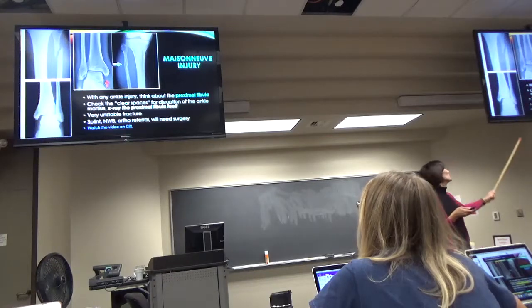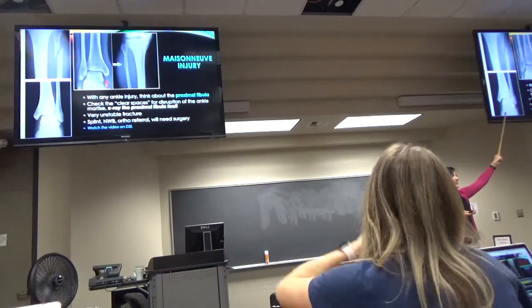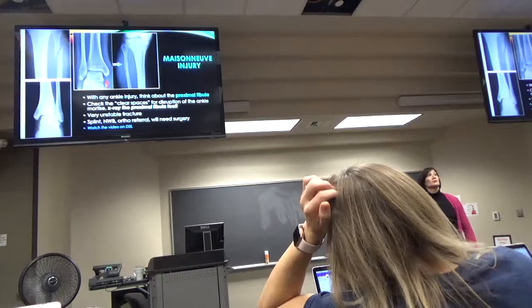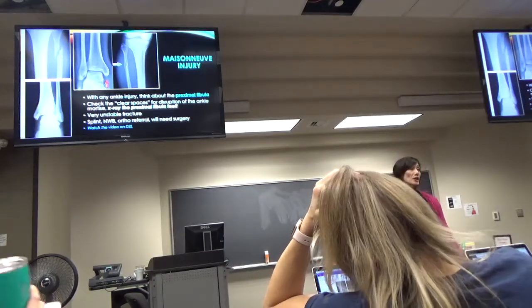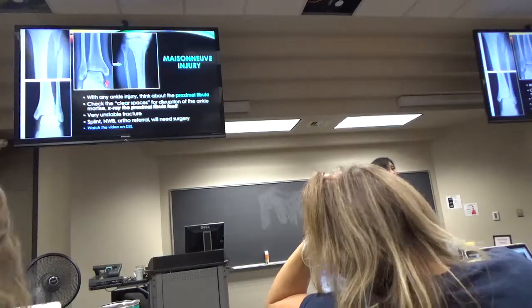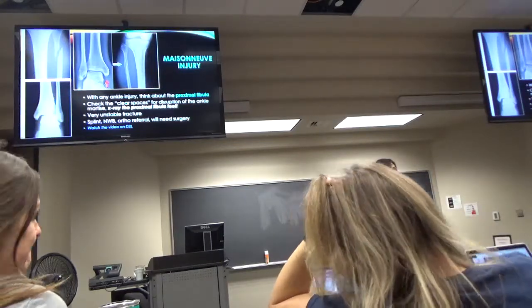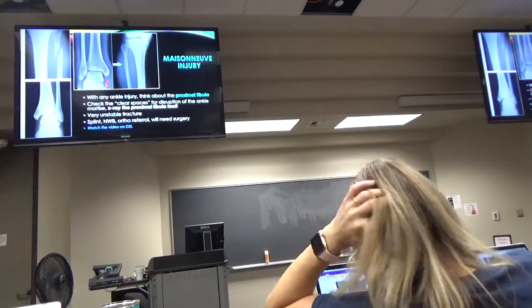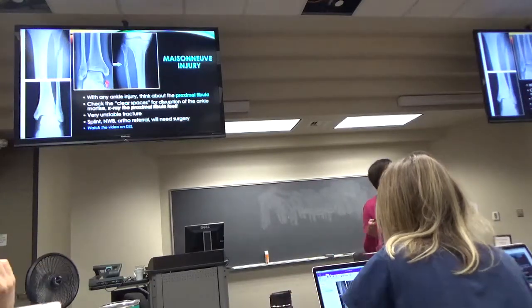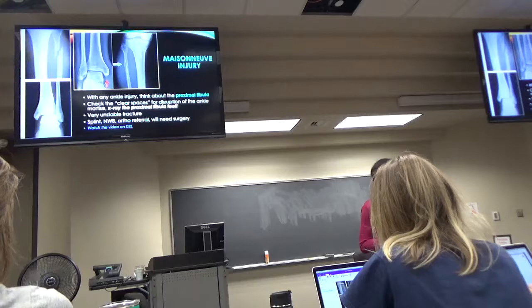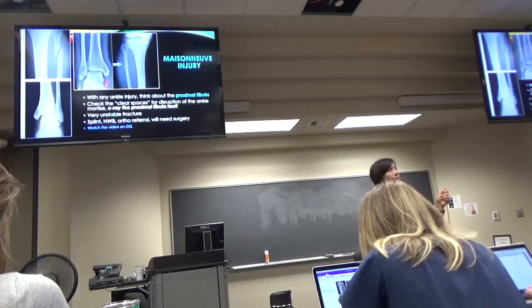This injury, if you just look down here, doesn't look that bad. But, the ankle is extremely unstable. So, if you were to send them away, like, oh, you sprained your ankle, and weight bear as tolerated, use some crutches for a couple days, it's bad. So, don't forget to check the proximal fibula. And, if you see that fracture, that's a Maisonneuve injury.